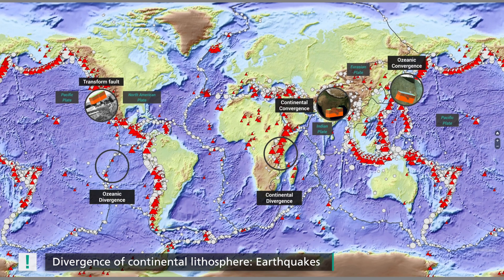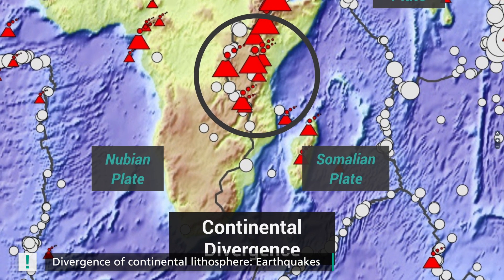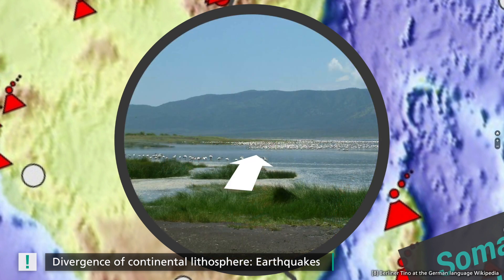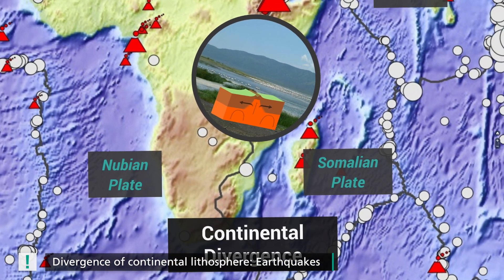Divergence zones may occur in oceans or on continents. One example of the latter is the Great Rift Valley in eastern Africa. In this case, the plates are drifting apart, which means Africa is literally breaking apart, albeit extremely slowly. Shown here is a photo of the edge of a rift that is moving away from the center of the rift.